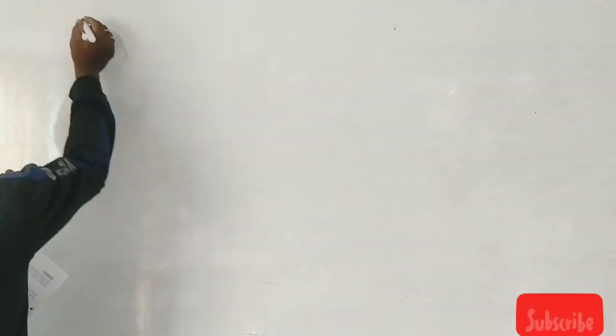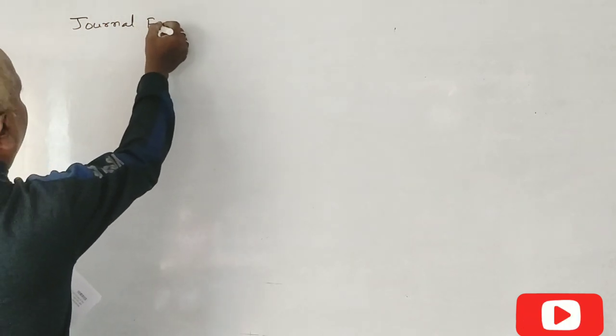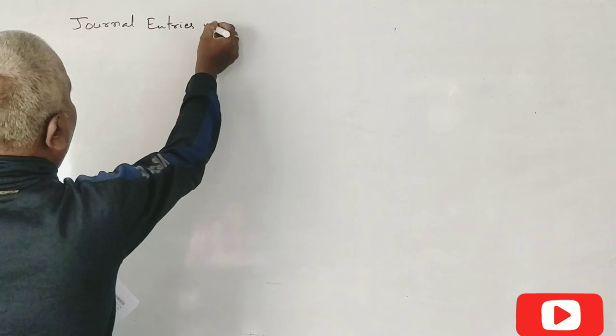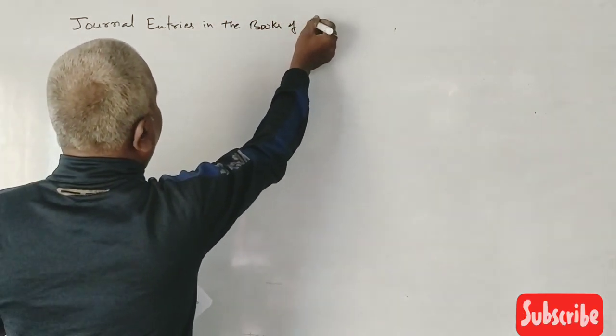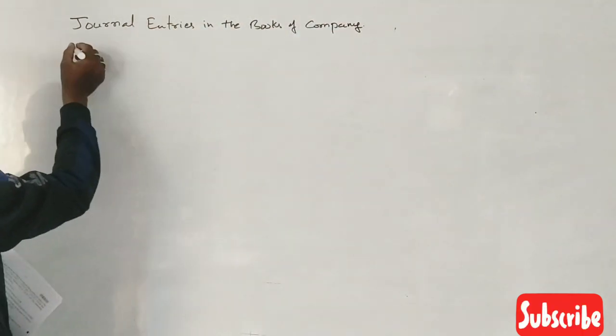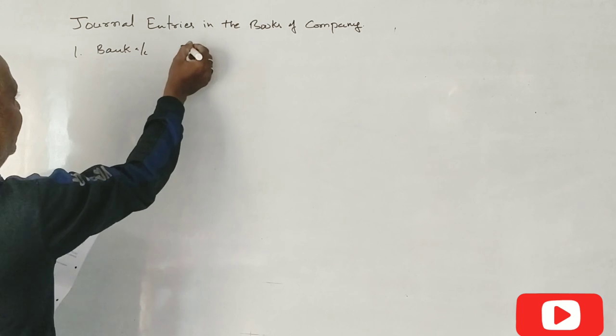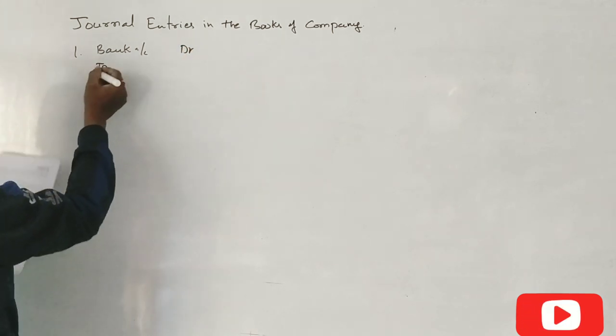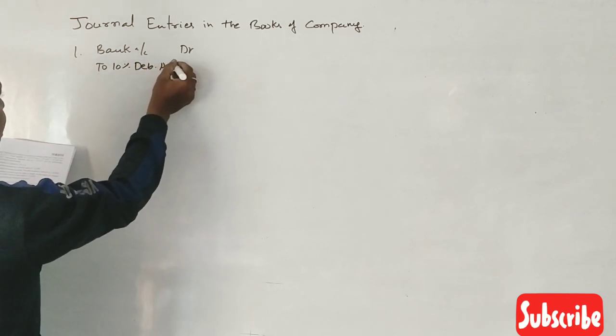So, journal entries in the books of company. First journal entry: Bank account debit to 10% Debenture application account.